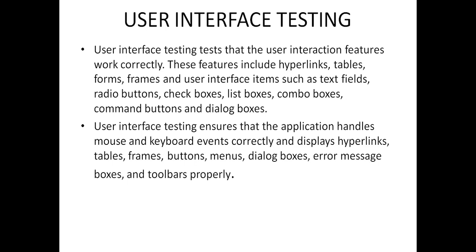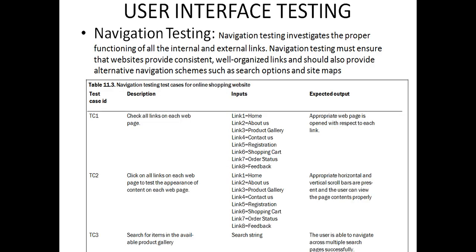User interface testing ensures that the application handles mouse and keyboard events correctly and displays hyperlinks, tables, frames, buttons, menus, dialog boxes, error messages, and toolbars properly. User interface testing is divided into three parts. First, navigation testing: navigation testing investigates the proper functioning of all internal and external links, checking whether the hyperlinks provided for various features, tables, and tools are working or not. Navigation testing must ensure that websites provide consistent, well-organized links and should also provide alternative navigation schemes such as search options and site maps.